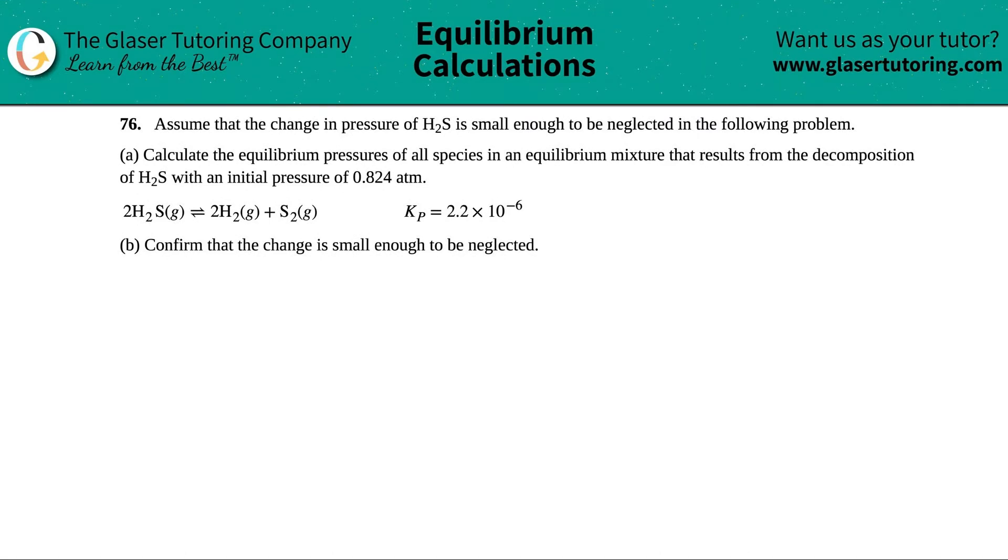Number 76. Assume that the change in pressure of H2S is small enough to be neglected in the following problem. And then we have letter A. Calculate the equilibrium pressures of all species in an equilibrium mixture that results from the decomposition of H2S with an initial pressure of 0.824 atm.